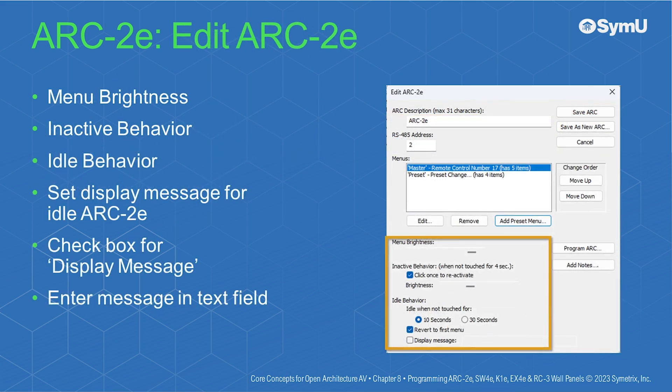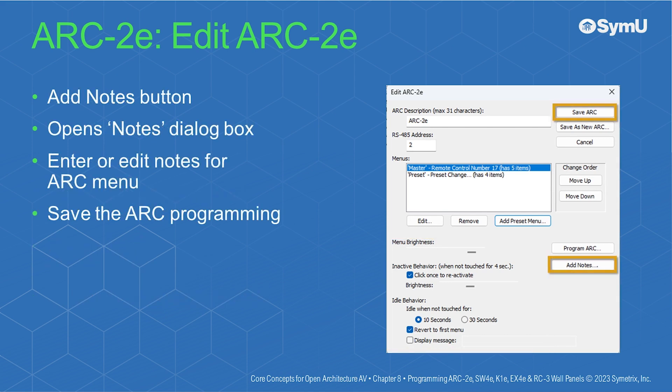The menu brightness, inactive behavior, and idle behavior are set in this section of the Edit Arc2E window. To set a display message for when the Arc2E is idle, check the box for Display Message and enter the message into the text field. The Add Notes button opens the notes dialog box to enter or edit notes for the Arc menu currently being edited. The final step is to save the Arc programming.